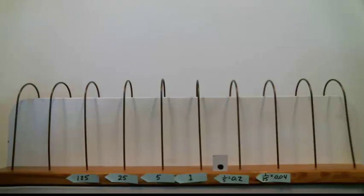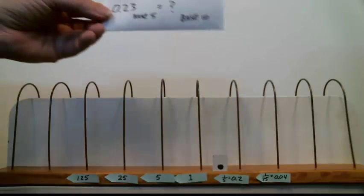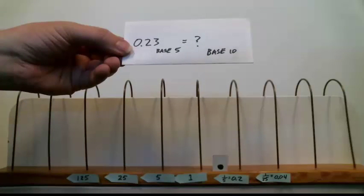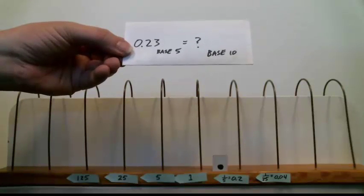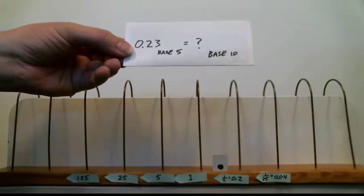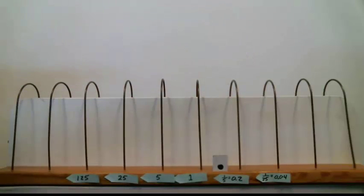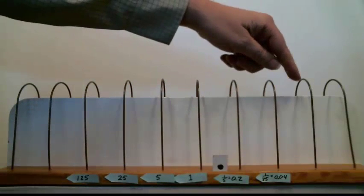So far we've used the base 5 abacus to do whole number conversions into base 10. But what if we have a fractional number? What if we have a number like this? That's 0.23 in base 5. What does that mean? Well, it's done in almost exactly the same way.